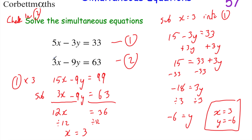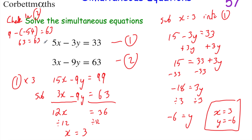Let's check in equation 2. 3 times 3 is 9. Subtract 9y — well, 9 times minus 6 is minus 54 — so subtract minus 54, which is 9 + 54 = 63. And that should equal 63, so 63 = 63. We're right: x = 3 and y = −6.